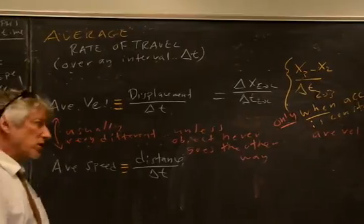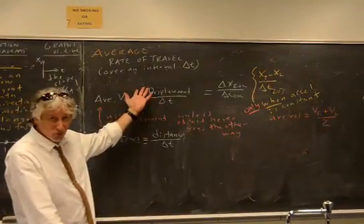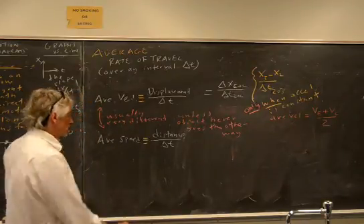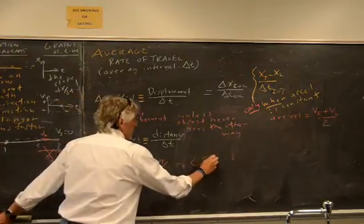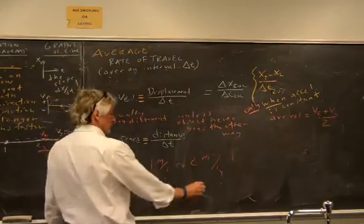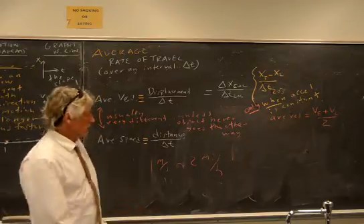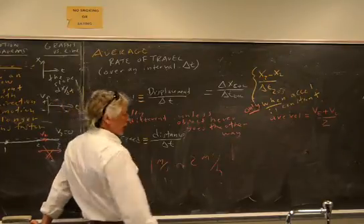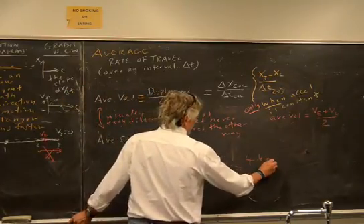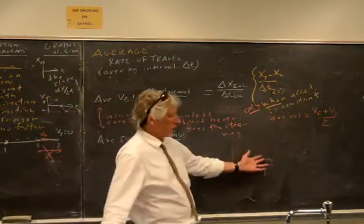Average speed is distance over time. The units can be anything — meters per second, kilometers per hour. One meter per second is about 2.2 miles an hour. Super roughly, a mile is about two kilometers, so that's about four kilometers per hour — just to get a sense of the scale.